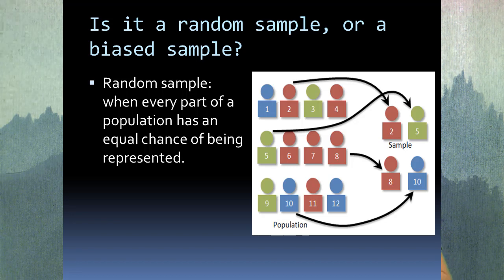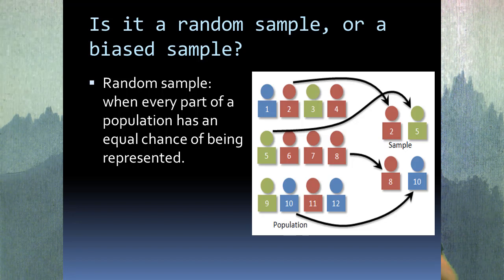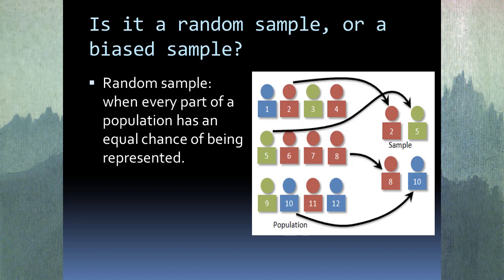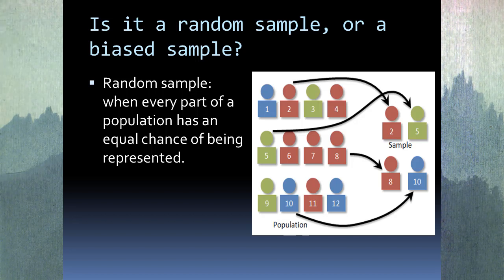A random sample is basically when each part of a population has an equal chance of being represented. In this chart, there are four rows and the sample takes at least one from each row — not all from the first row. That's what makes it random: each row has a chance of being represented.